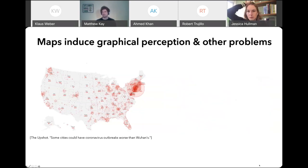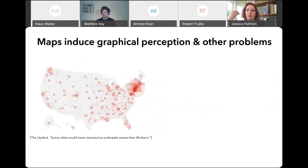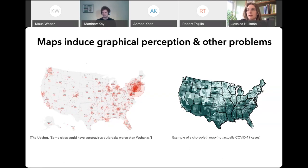First, both of these maps are plotting count to a circular area. But we know from graphical perception that people are not very good at making area estimates — we tend to have a lot of error in trying to compare different circular areas. Another obvious issue is occlusion. It's hard to see anything around the eastern seaboard because New York's circle is occluding a lot of it. One way to reduce occlusion is by using a choropleth map, which colors each location by county according to the number of cases. But there are still issues — the size of different counties will confound what we pay attention to, since very densely populated areas are often smaller in area.